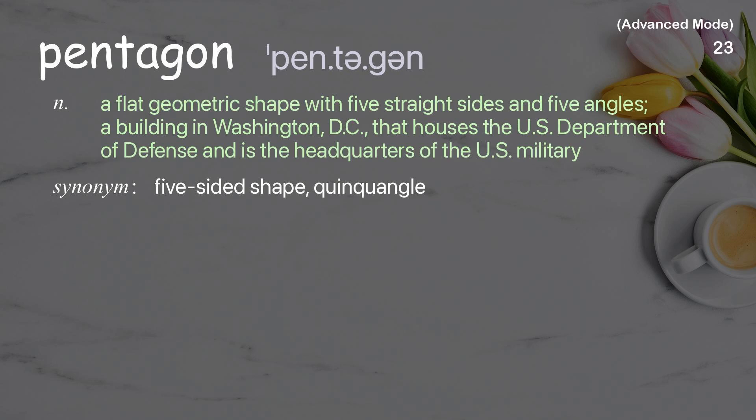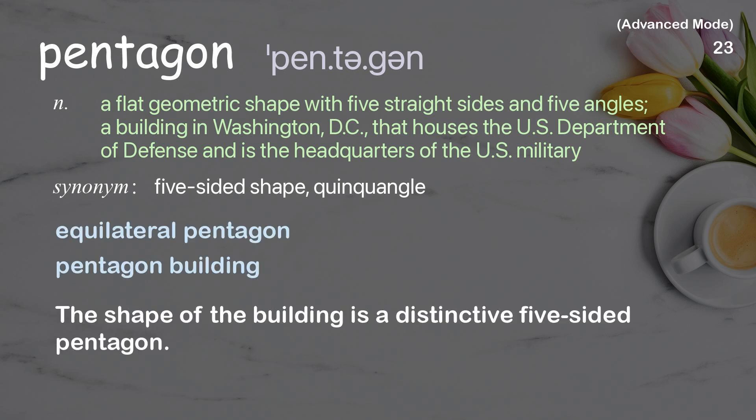Pentagon: a flat geometric shape with five straight sides and five angles; also a building in Washington, D.C. that houses the U.S. Department of Defense and is the headquarters of the U.S. military. Examples: equilateral pentagon. The shape of the building is a distinctive five-sided pentagon.